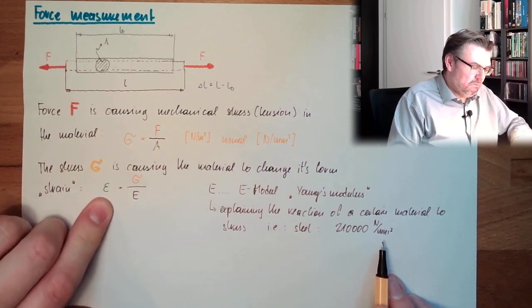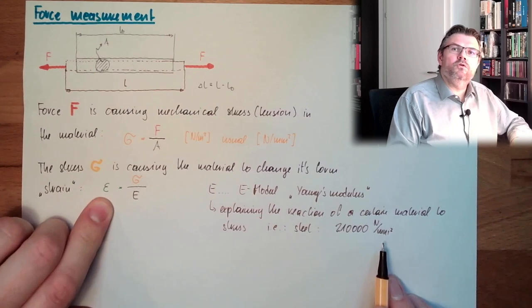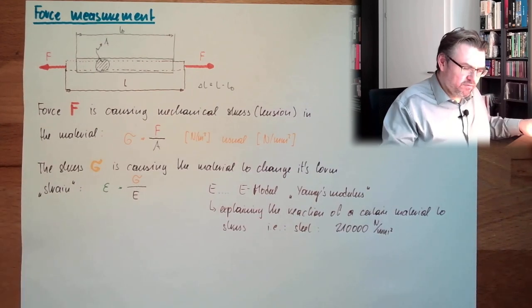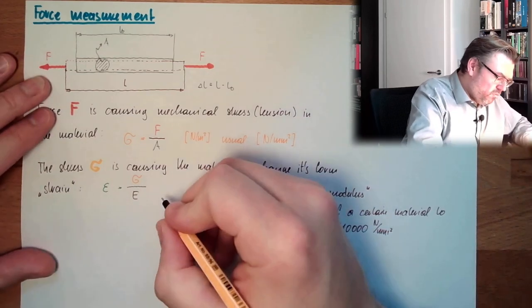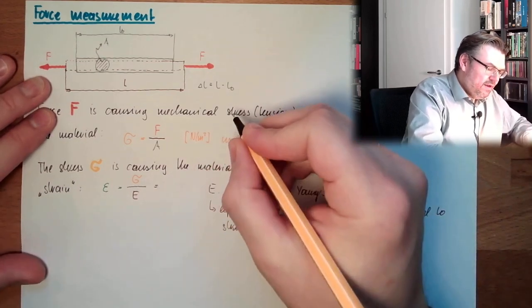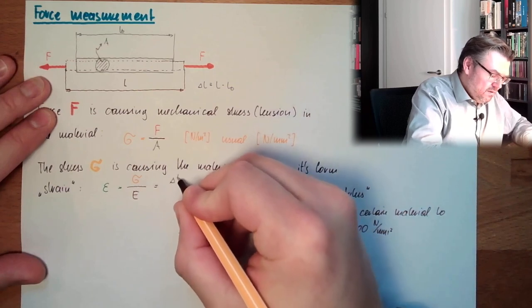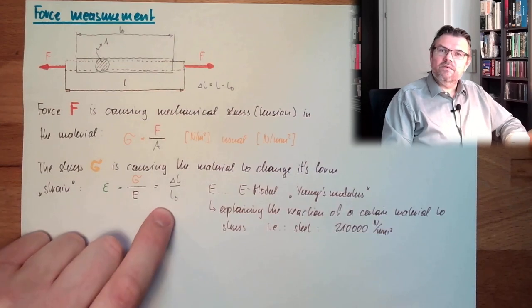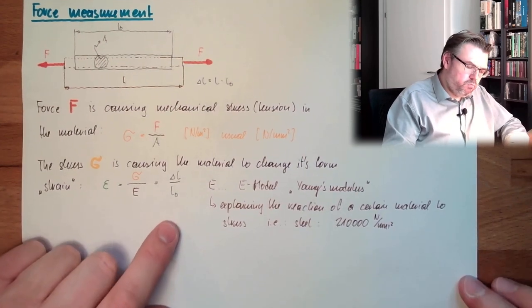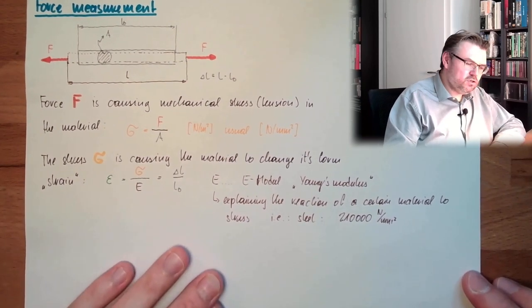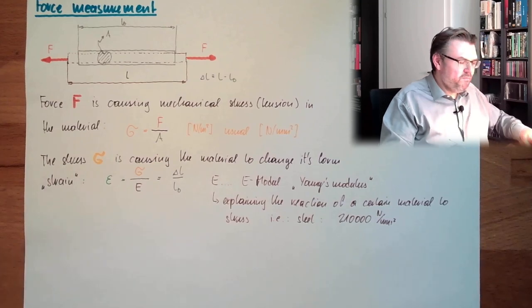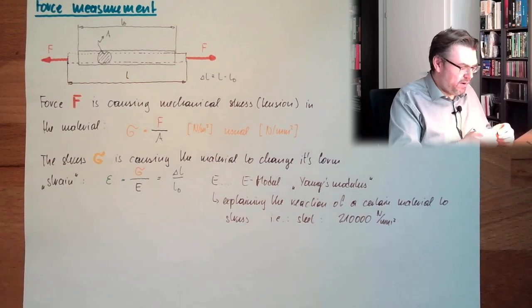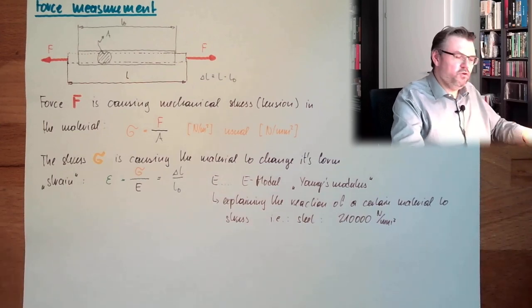So for epsilon there is no unit. How can this be? What is this epsilon? Well, epsilon is actually nothing more, nothing less than this delta L divided by the original length. So how much, what is the ratio of this material getting longer? This is described by epsilon. So there is no unit to epsilon.